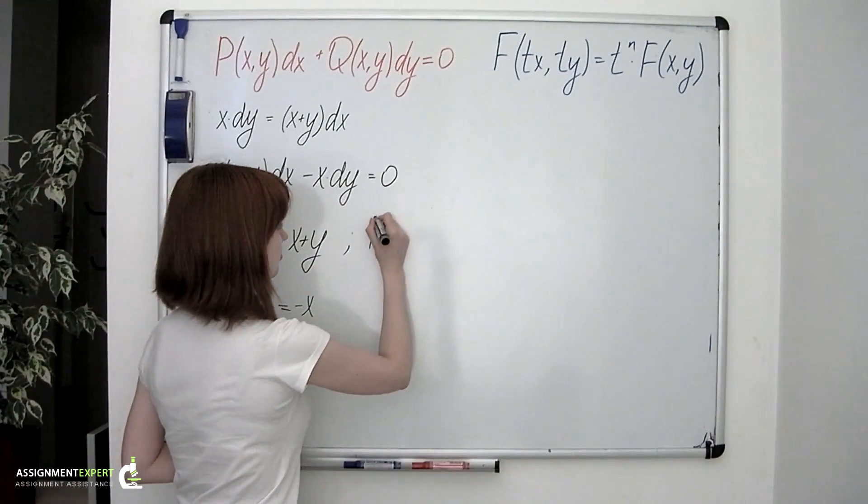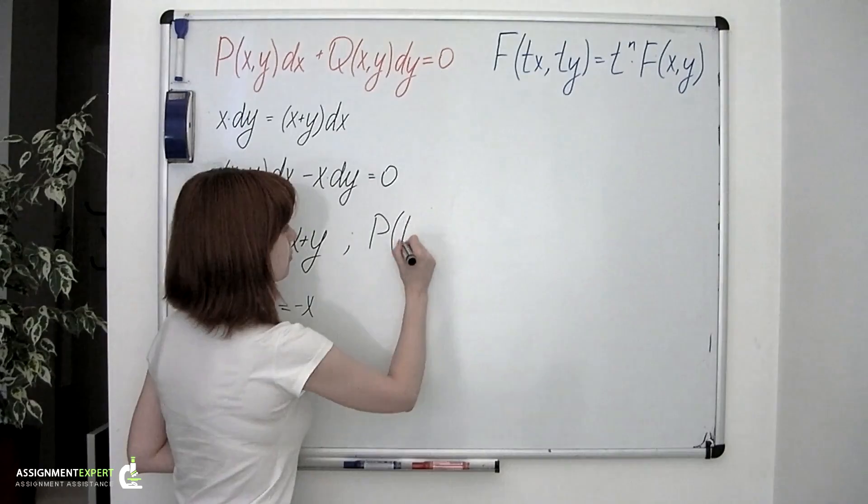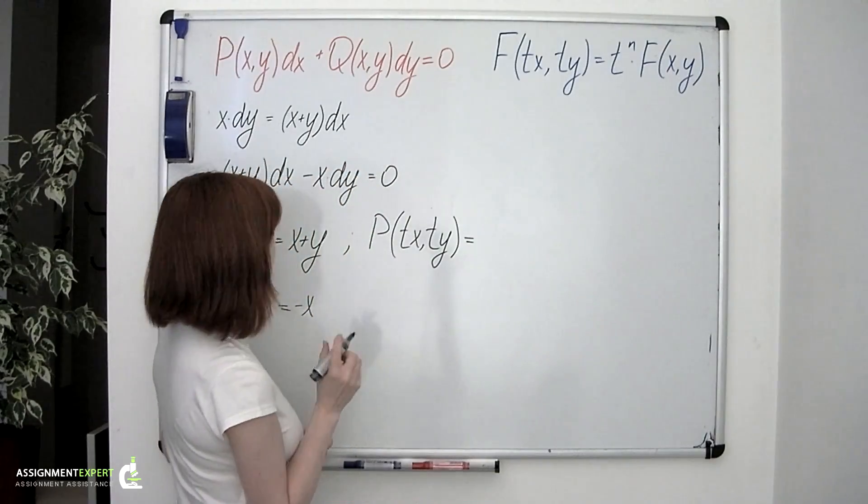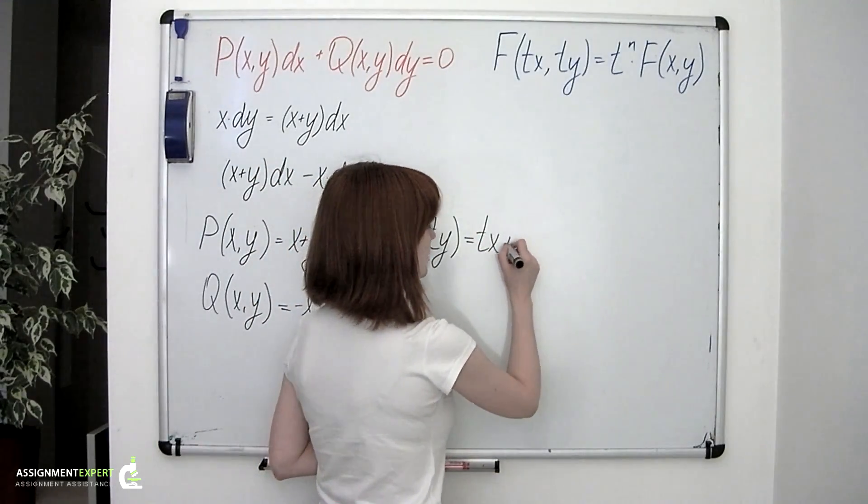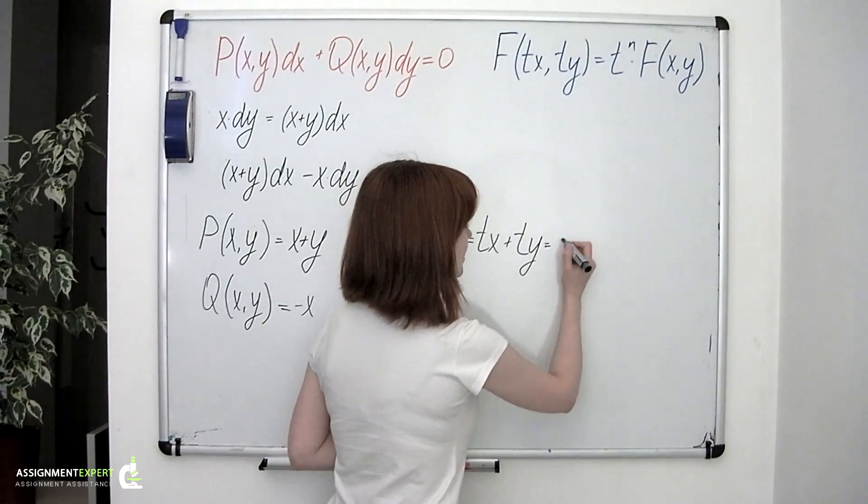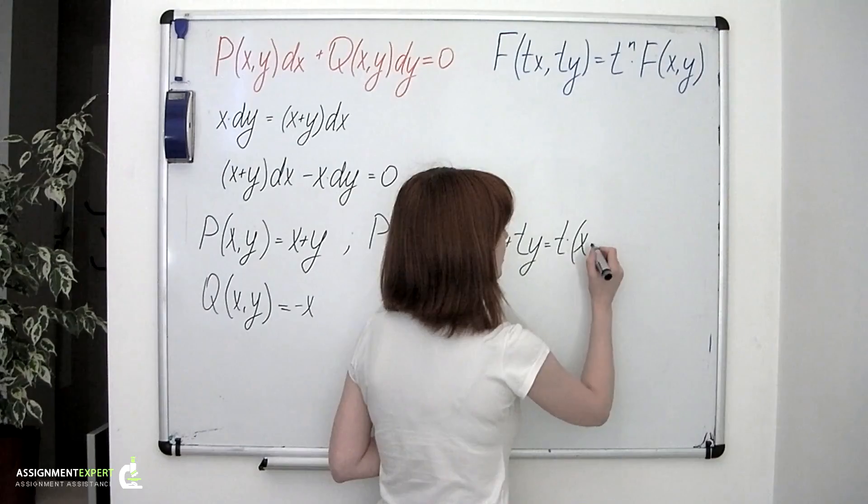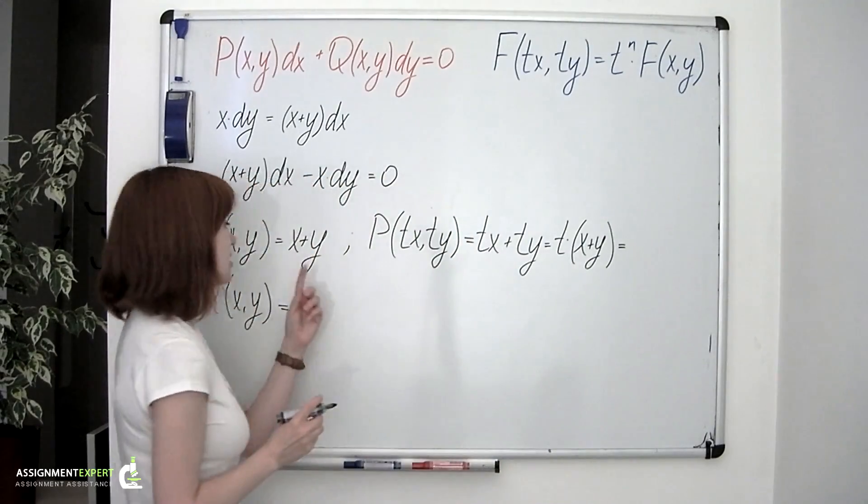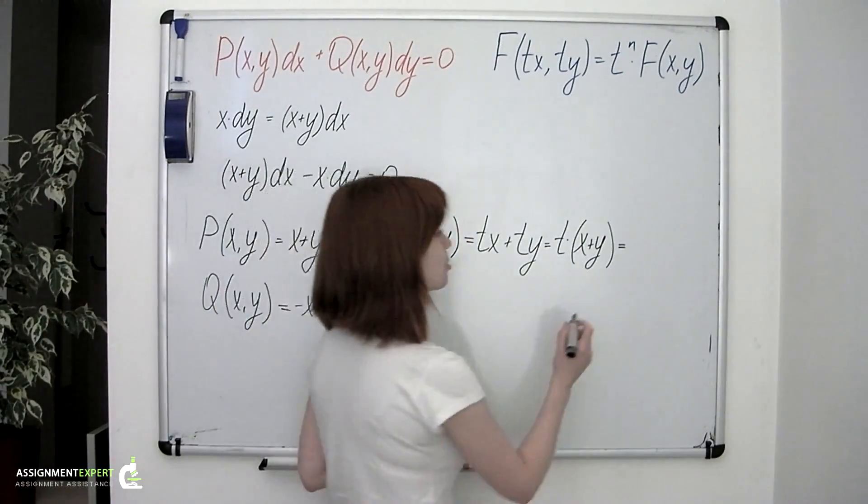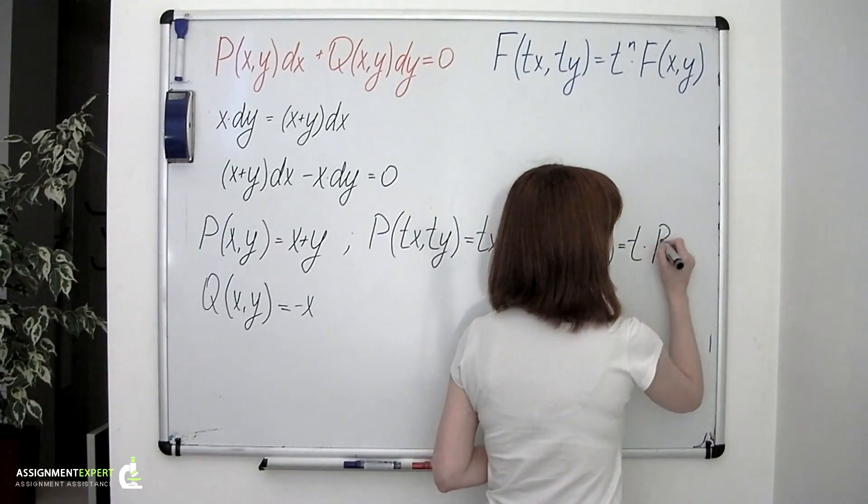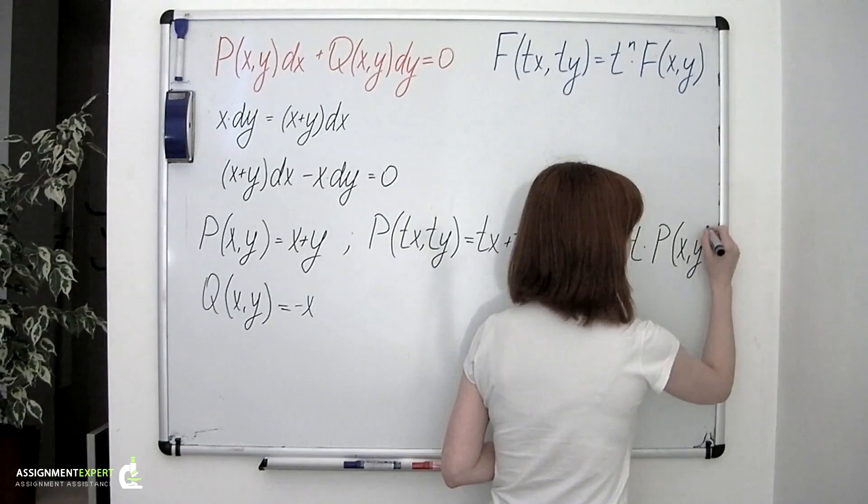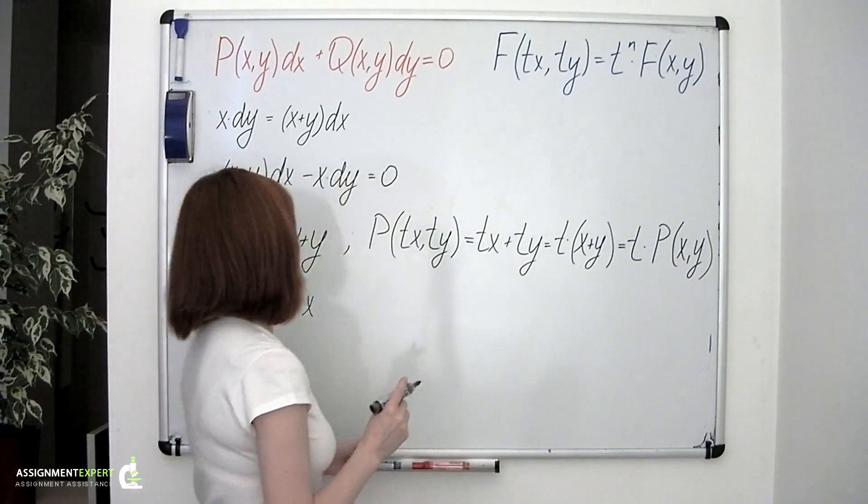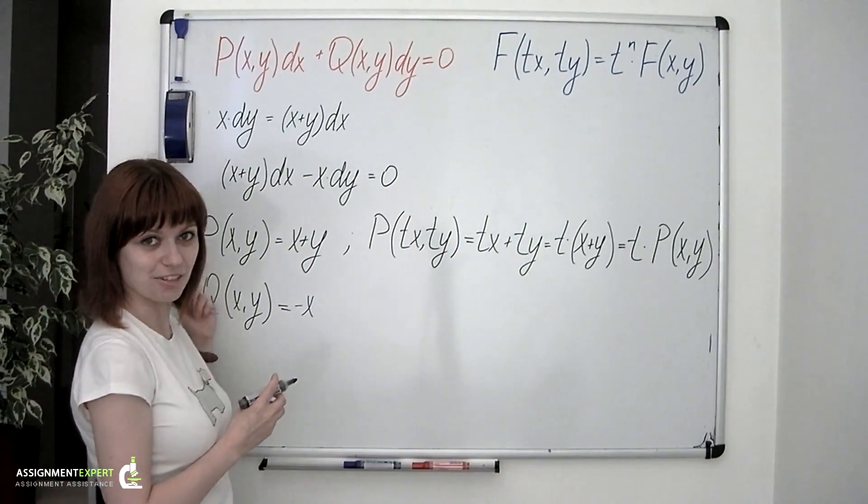Now let's see. P of tx and ty equals tx plus ty. Obviously t can be factored out. So we'll have t times x plus y. And the expression we have in brackets is nothing else than the P function itself. So we can also write t multiplied by P of x and y. As we can see, t is taken to the first power. And therefore, this P function is homogeneous of the first degree.